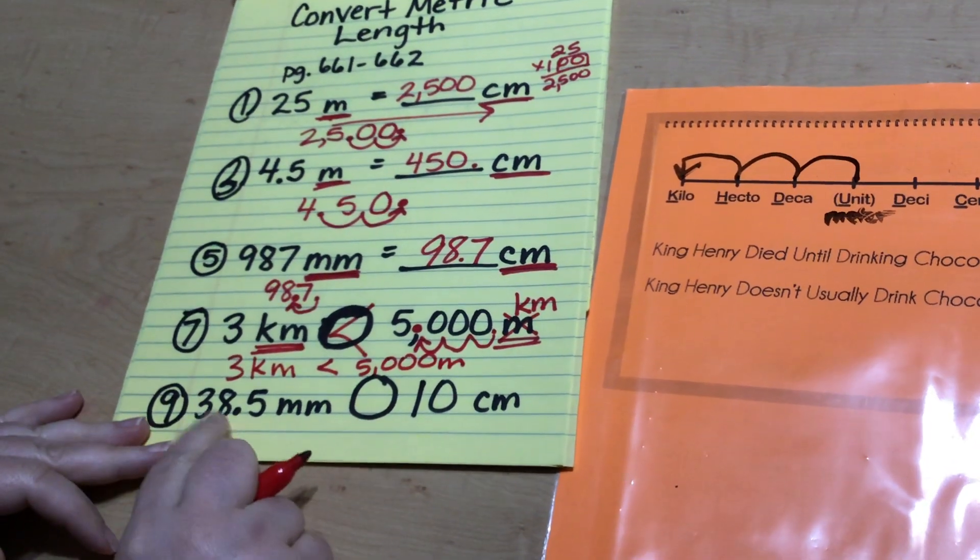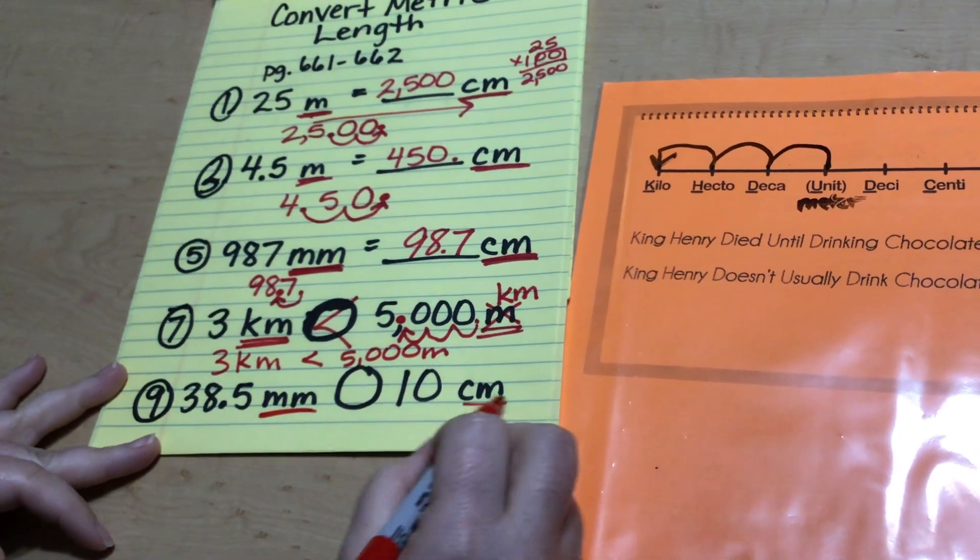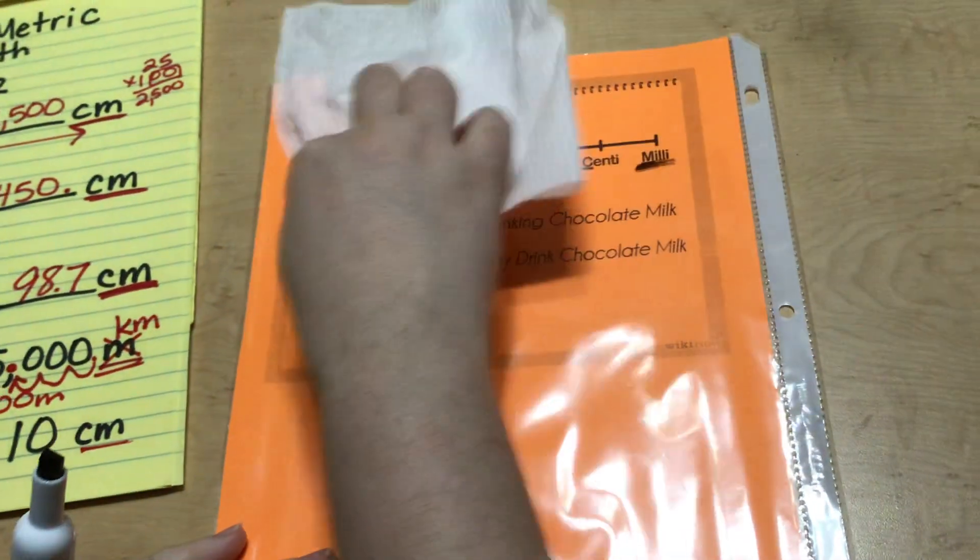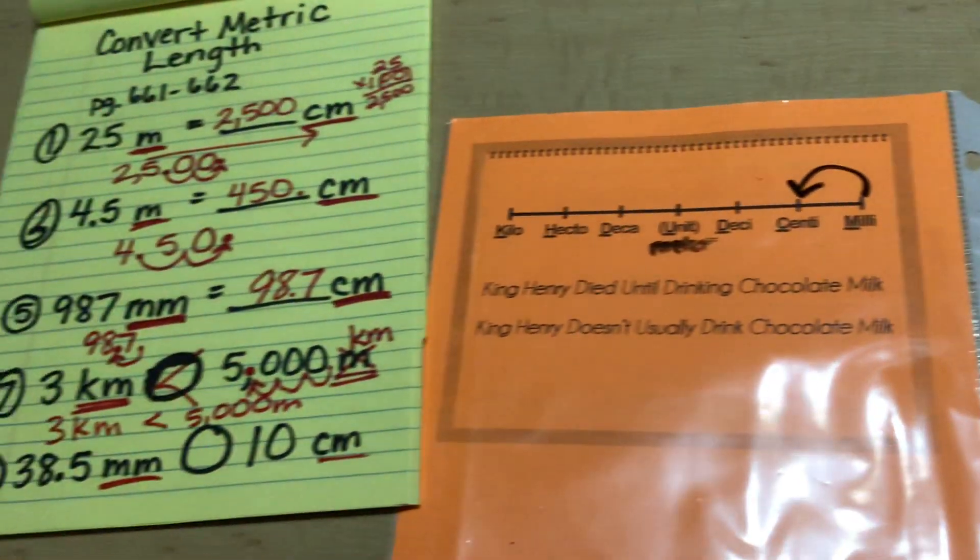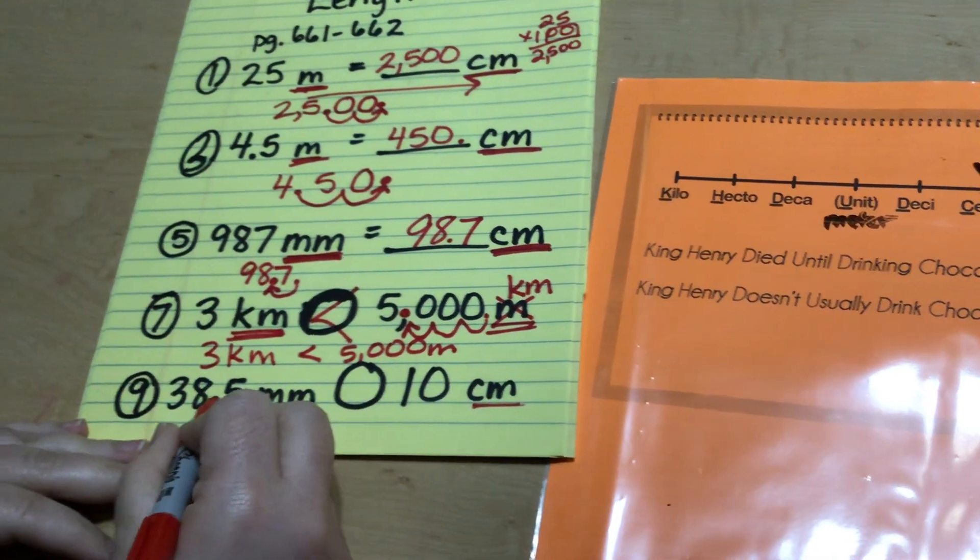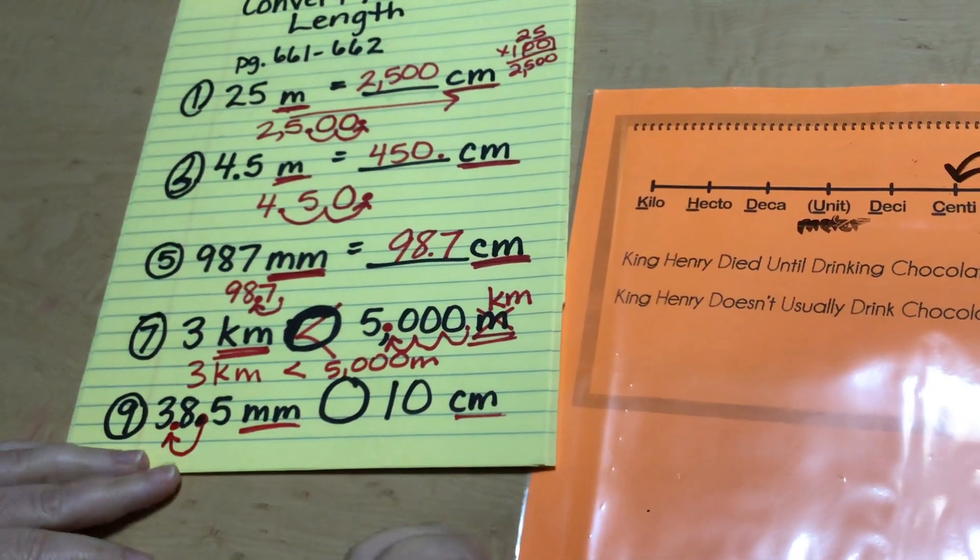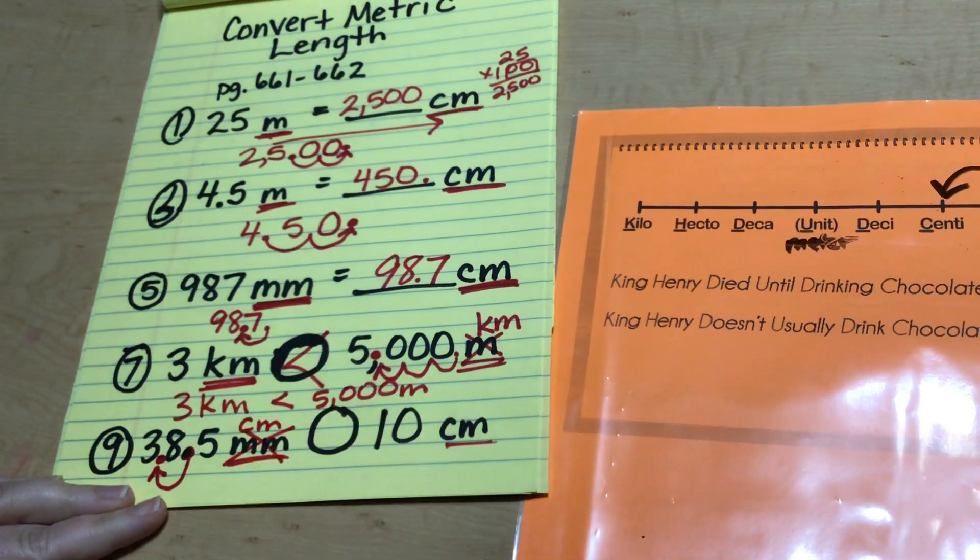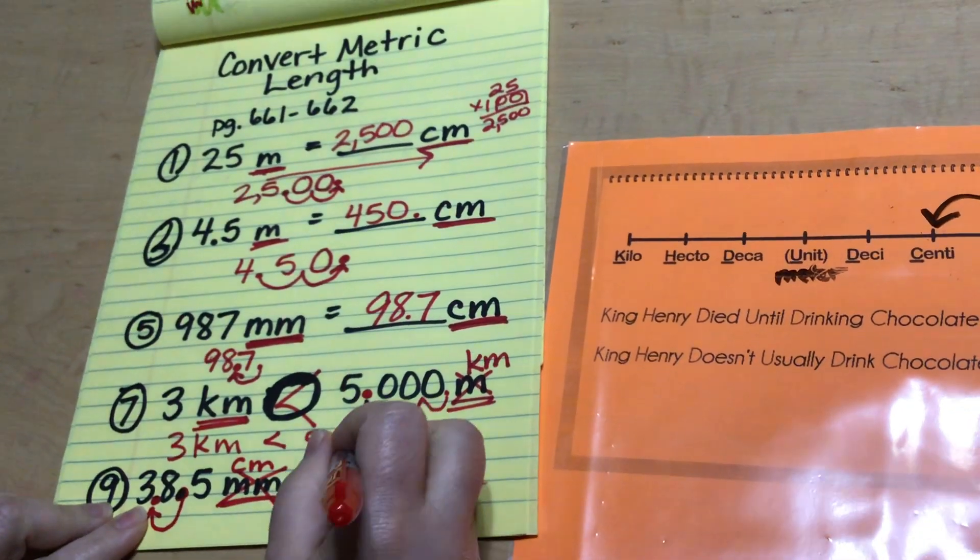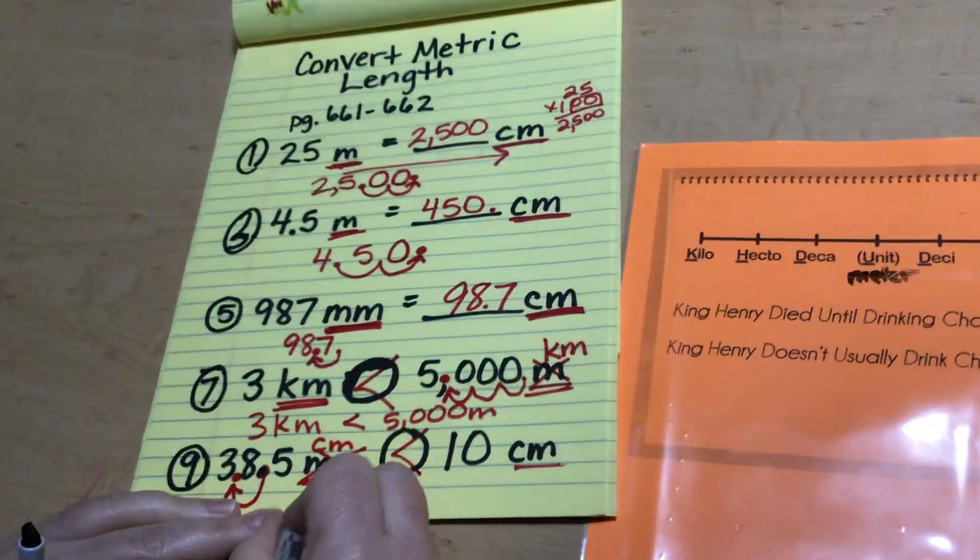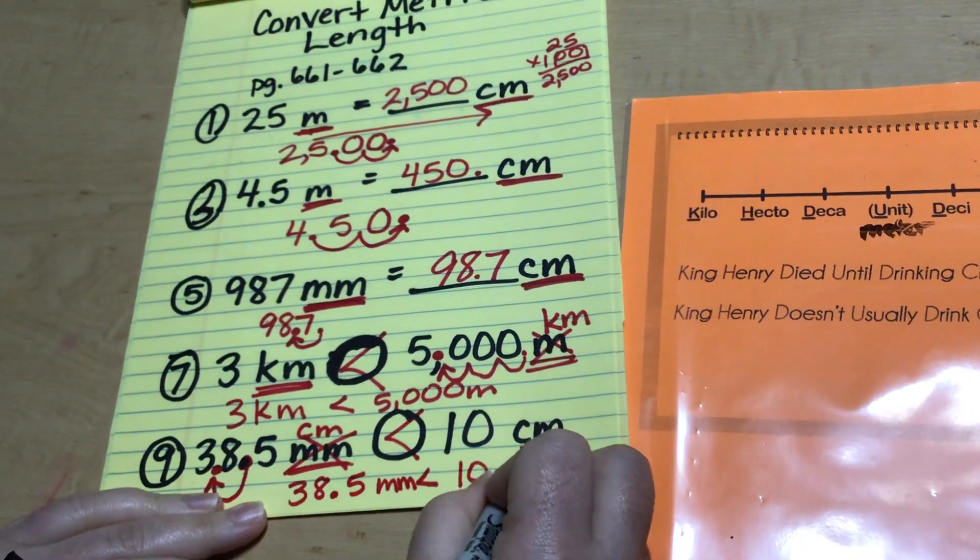Let's do one more like that. We have 38.5 millimeters and we have 10 centimeters. I think I'll go from millimeters to centimeters. I'll change this one. So look at your little chart. This time we're gonna go from millimeters to centimeters. That's one jump to the left. So I'm gonna go to my millimeters, find my decimal. It's right here. And I'm gonna make one jump to the left. So instead of 38.5 millimeters, now I have 3.85 centimeters. Well, is 3.85 centimeters greater or is 10 centimeters greater? Well, 10 centimeters more than 3 centimeters. So let's just rewrite that now. 38.5 millimeters was less than 10 centimeters.